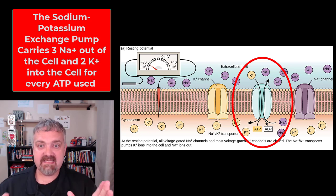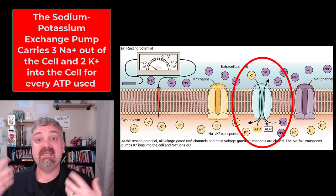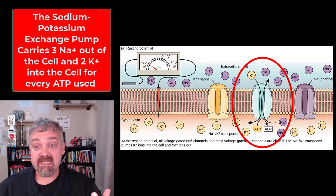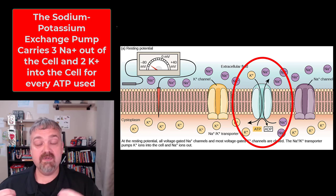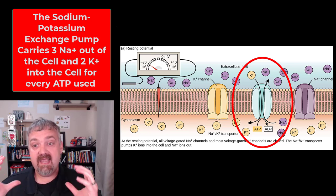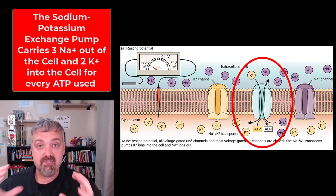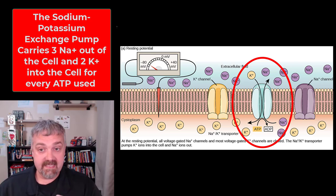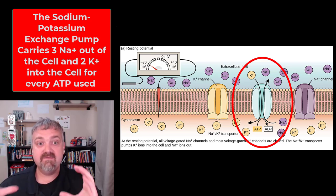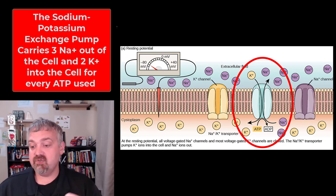That is the resting membrane potential — this is the potential energy. This is a locked and loaded gun with the trigger cocked. The energy to depolarize and turn this neuron on is here because of this resting potential.